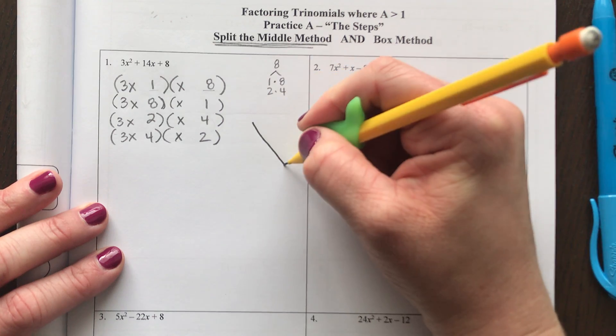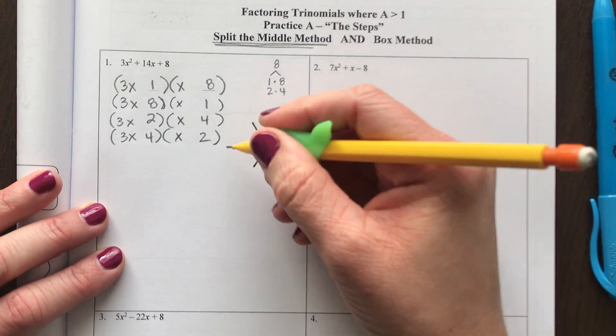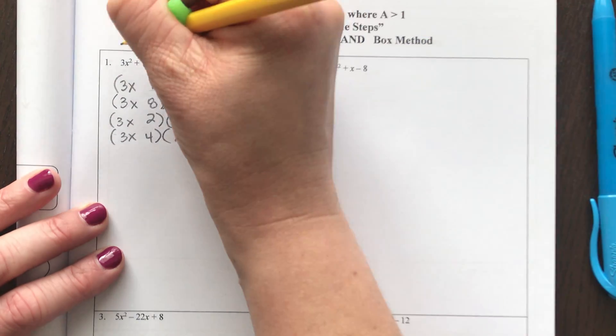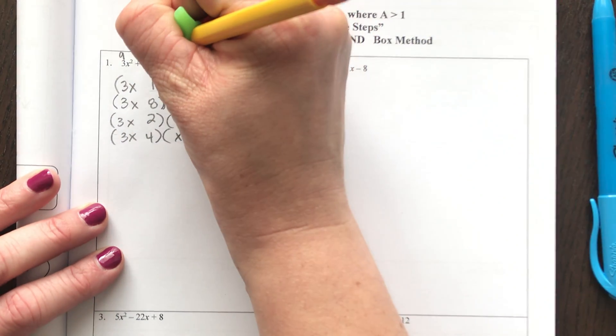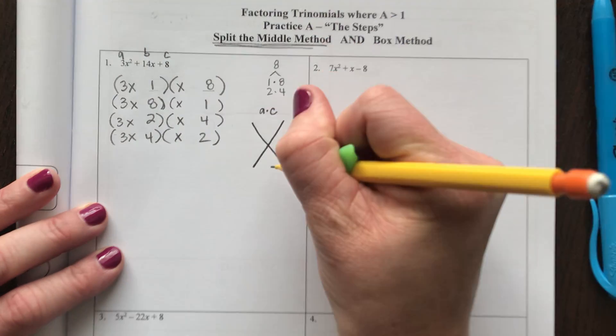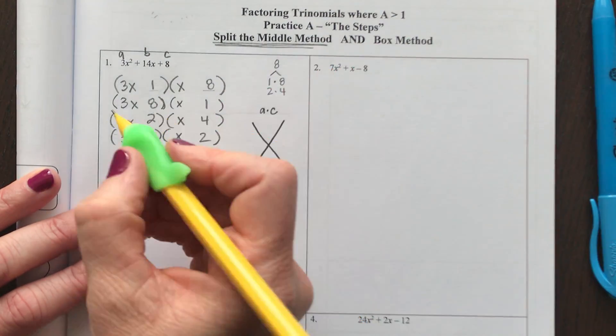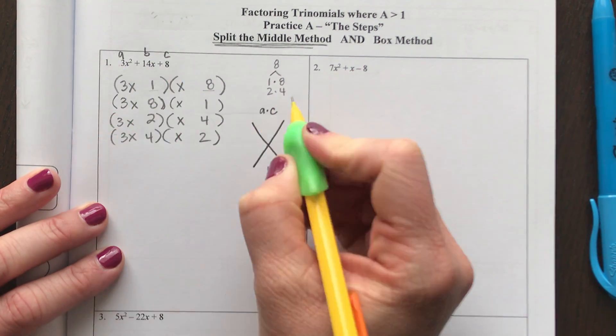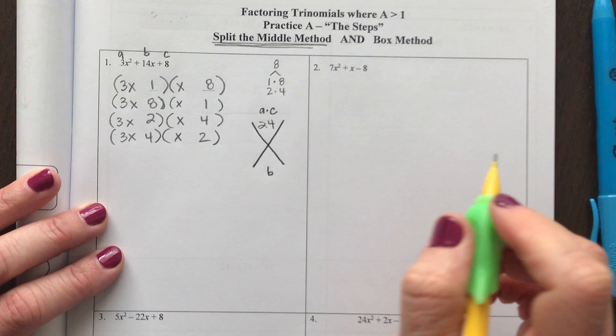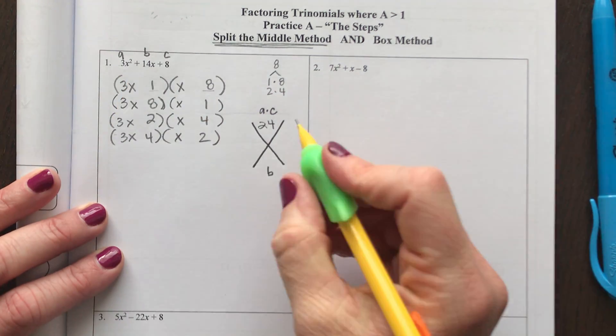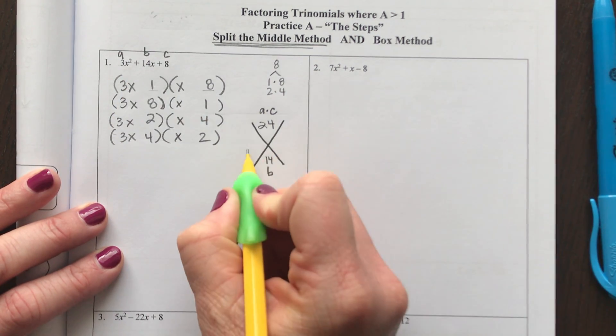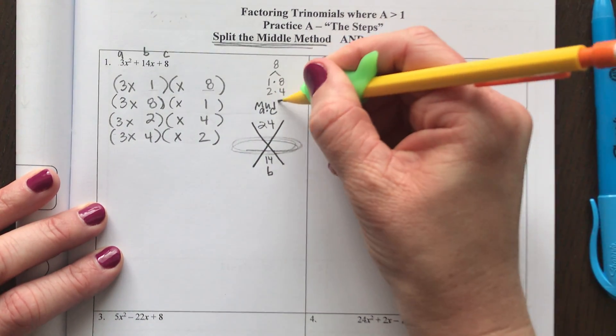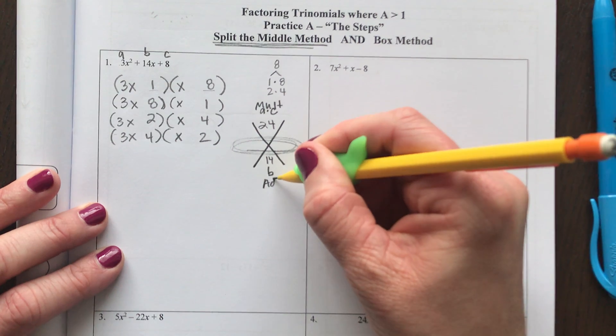You need to have in mind this thing that I call a big X. What you put at the top of the big X is your A times C of your polynomial. So Ax² + Bx + C. And at the bottom of your big X you put the B term. So A which is 3 times C which is 8. 3 times 8 is 24 at the top of my big X. The middle number is what goes at the bottom. Then you're going to find two numbers here that multiply to make the top number and add to make the bottom number.